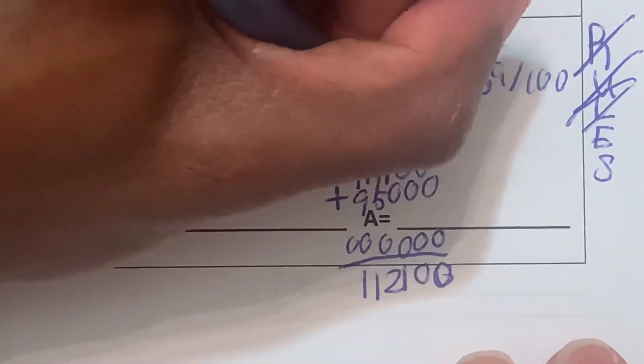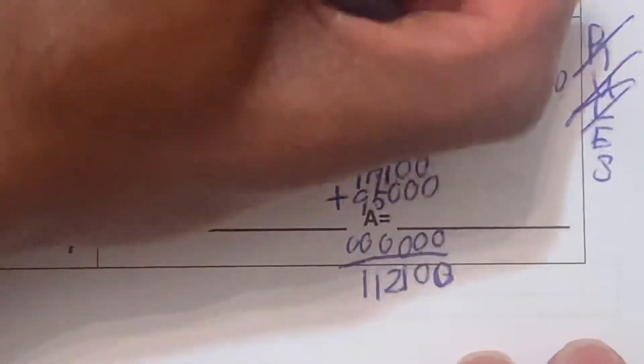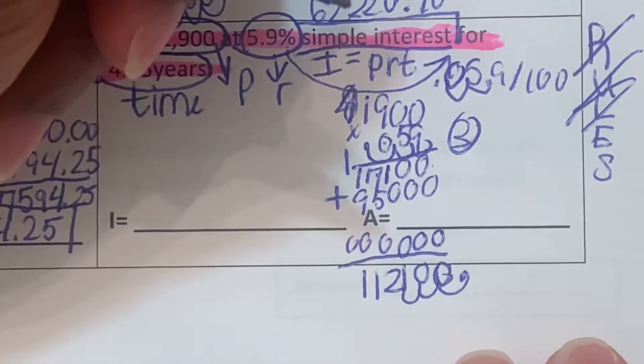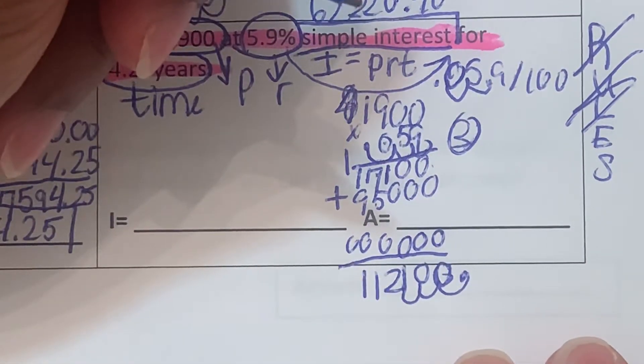0 plus 0 is 0, 0 plus 0 is 0, 1 plus 0 is 1, 7 plus 5 is 12, carry the 1. 1 plus 9 is 10, plus 1 is 11. How many numbers do you have to write the decimal place? We have 1, 2, 3 numbers to write the decimal place. So we move our decimal towards the left 1, 2, 3 spaces towards the left. We have $112.10.